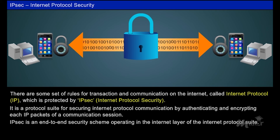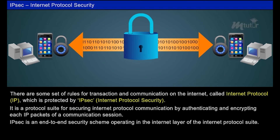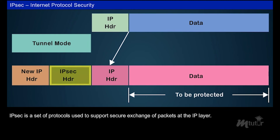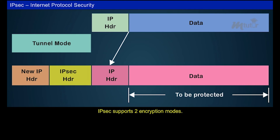IPSec is an end-to-end security scheme operating in the internet layer of the internet protocol suite. It can be used to protect data flows between a pair of hosts (host to host), between a pair of security gateways (network to network), or between a security gateway and a host (network to host). IPSec is a set of protocols used to support secure exchange of packets at the IP layer. IPSec supports two encryption modes: transport and tunnel.